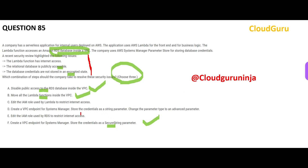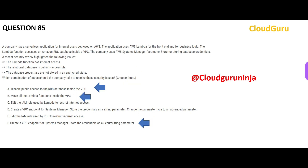It is a no-brainer that when you want to avoid internet access, you don't do that through IAM roles or IAM policies — that is wrong. Similarly, using IAM for RDS internet access restriction is also wrong. And when we talk about credentials being in an encrypted state, we don't create an advanced parameter — we use a SecureString parameter. Those are my three answers.